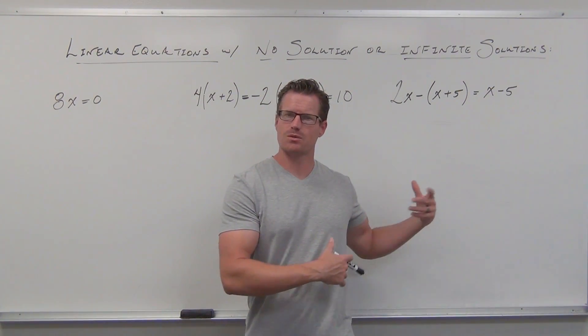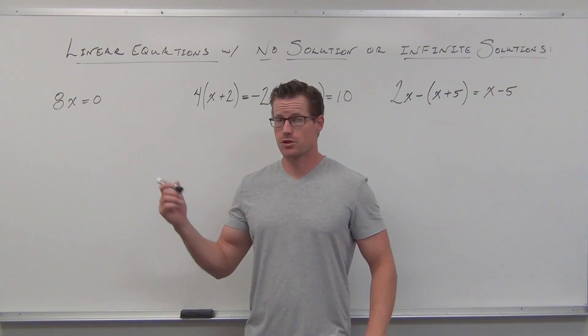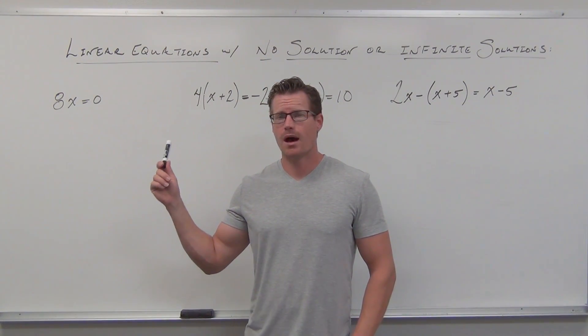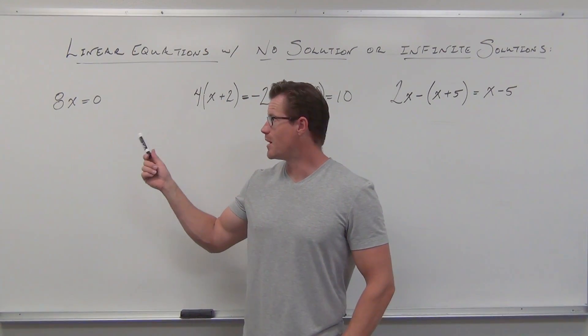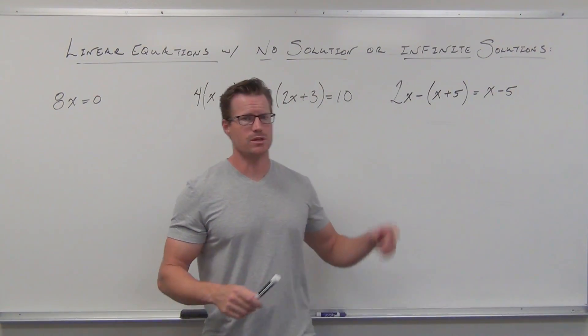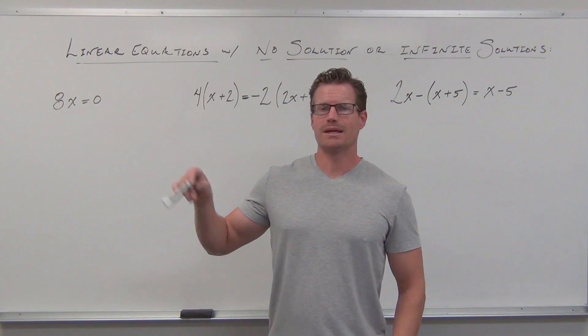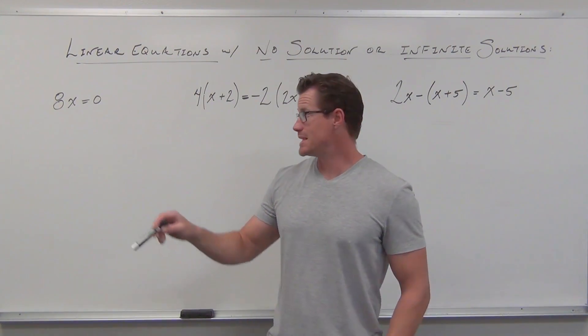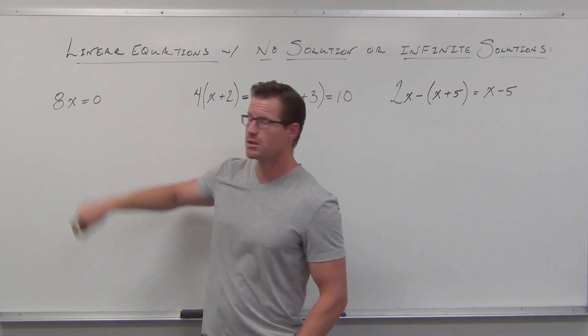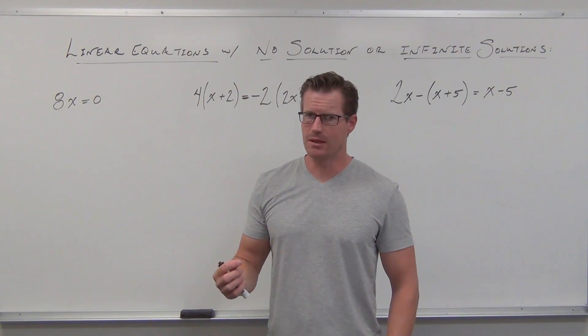These are the only three examples that we're going to take a look at today. The first one, very special, I want to talk a little bit about just to get it out of the way, and then we'll focus more on these ones. When you have something like 8x equals zero, this is definitely a linear equation - one variable of the first power.